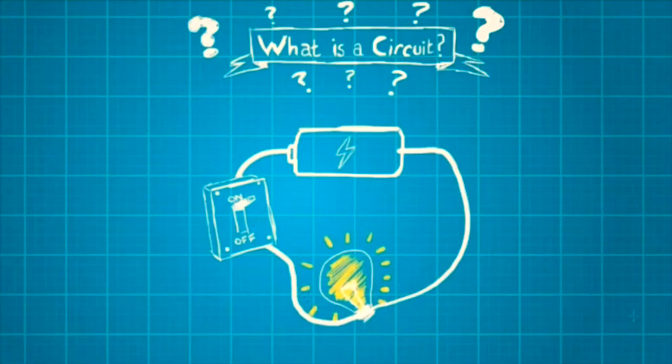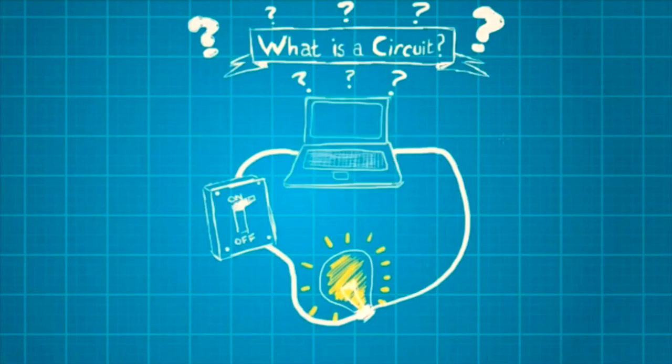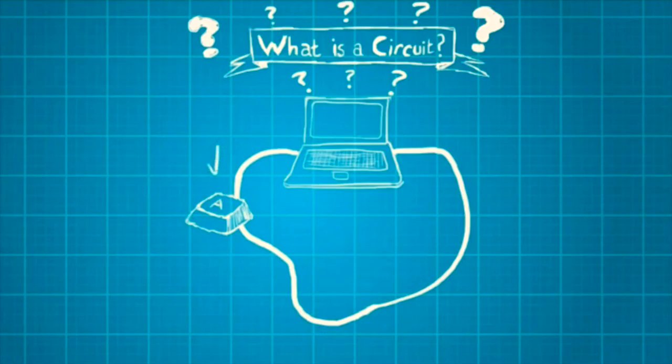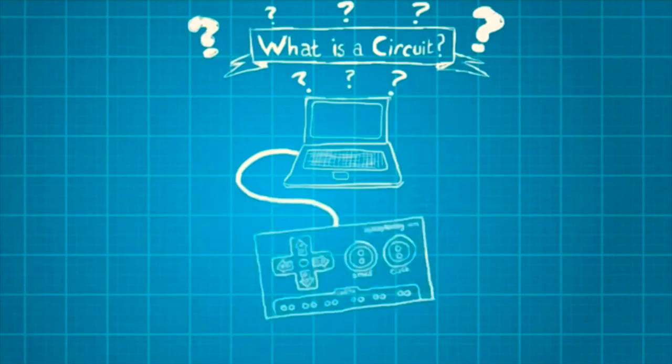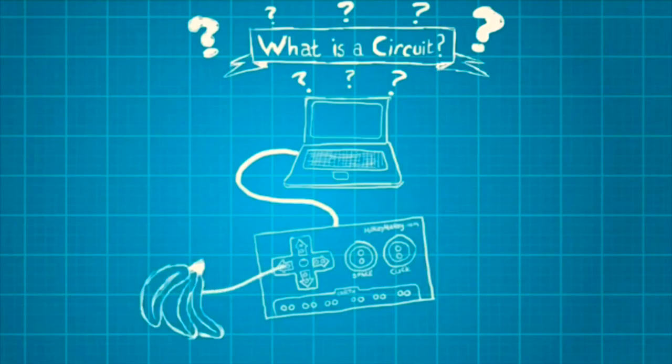Now when we're thinking about Makey Makey, we can replace our battery with a laptop and our switch with a keyboard key. We don't need our light bulb anymore. So when the key A is pressed down, that will complete our circuit. And that's when we get the A displayed on the laptop. We can now replace that keyboard key with the Makey Makey board. We can then associate something like the left arrow press with some bananas. So now our bananas mean left arrow press.